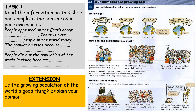To start, what we would like you to do is read the information on the slide — underneath where it says 'Our Numbers Are Growing Fast' — and try to complete the sentences in the grey box in your own words. It says 'People appeared on Earth about...' and you need to use the information on the slide to figure out when people first started to appear on Earth and how those populations increased over time. Today there are over 7 billion people living on Earth, and that is still set to rise. We're going to think about when the population grew so much and why, and how the population rises so fast.